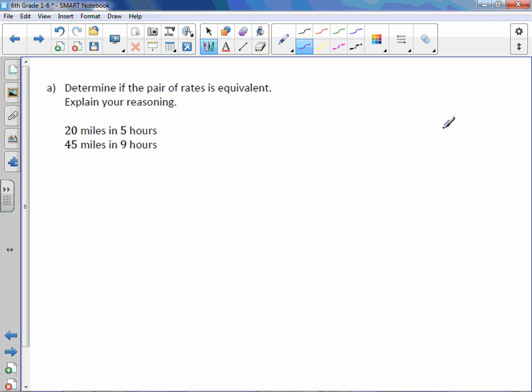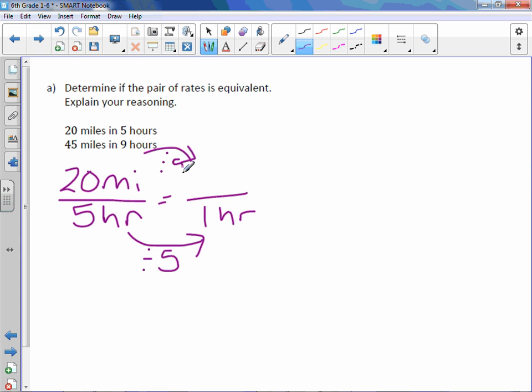Determine if the pair of rates is equivalent. Explain your reasoning. So we have 20 miles in 5 hours. We want to make this a unit rate, so we put 1 in the denominator. To get from 5 to 1, we divide by 5 and do the same up top. 20 divided by 5 is 4. So this is 4 miles per hour. That's the first unit rate.